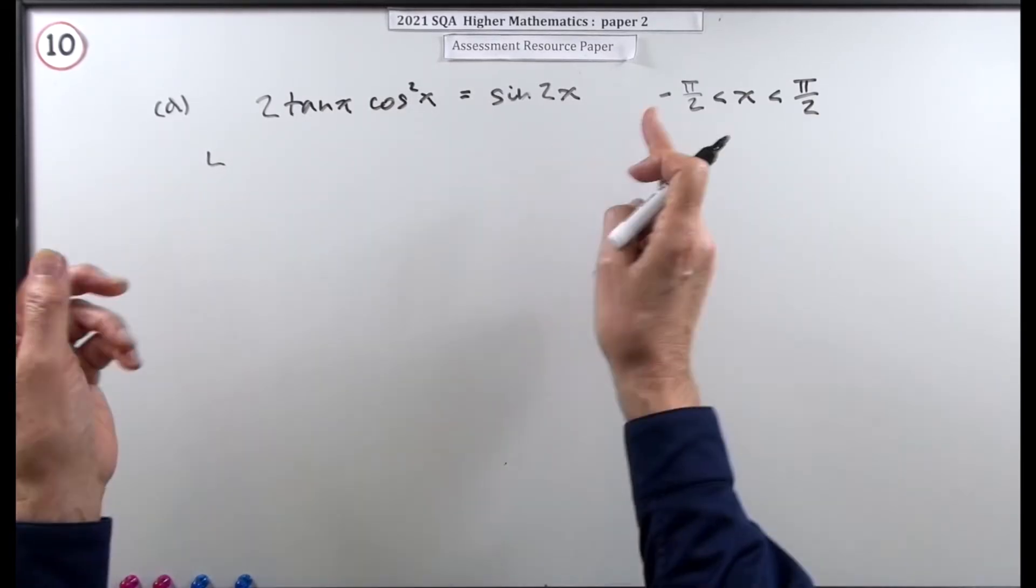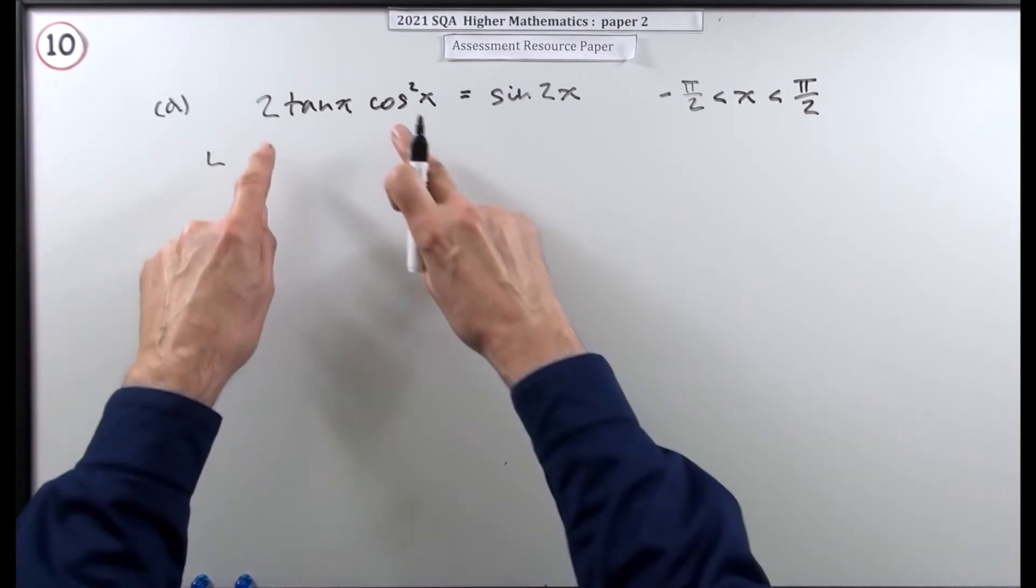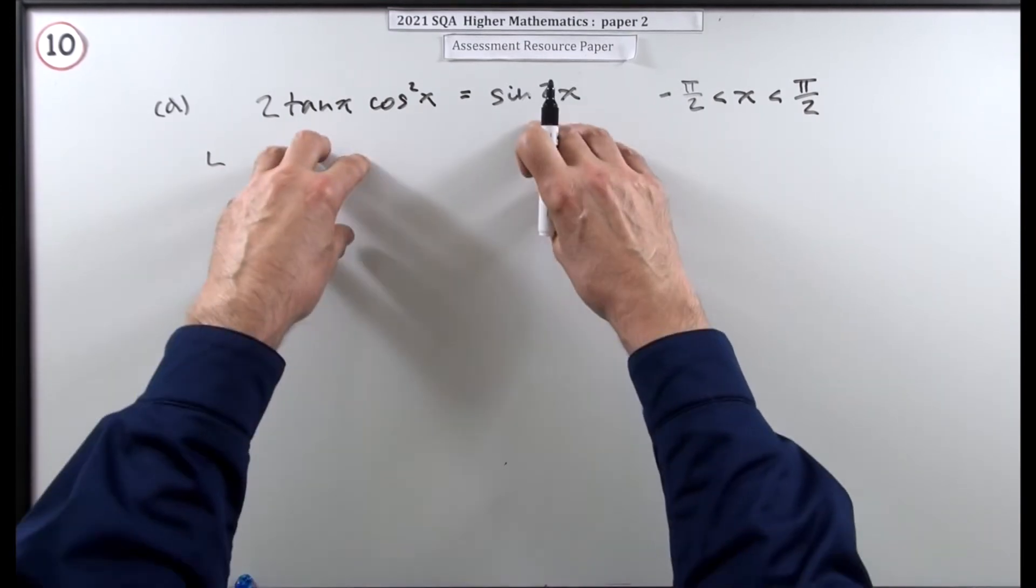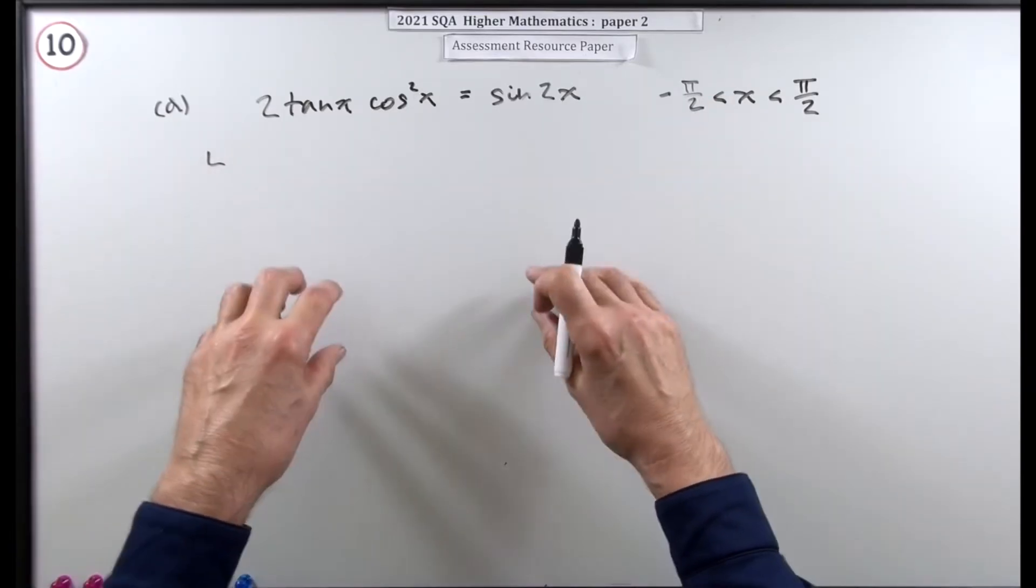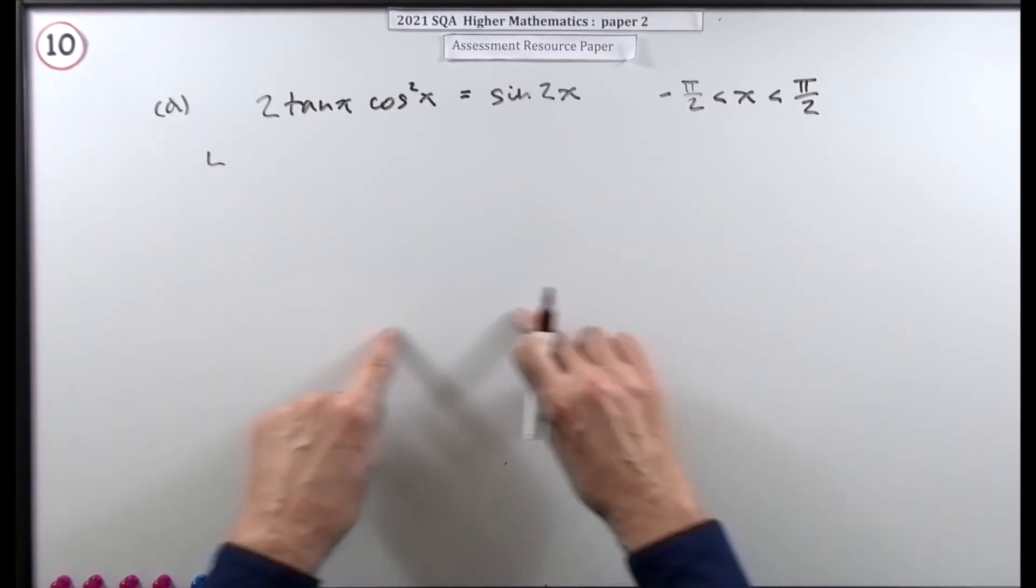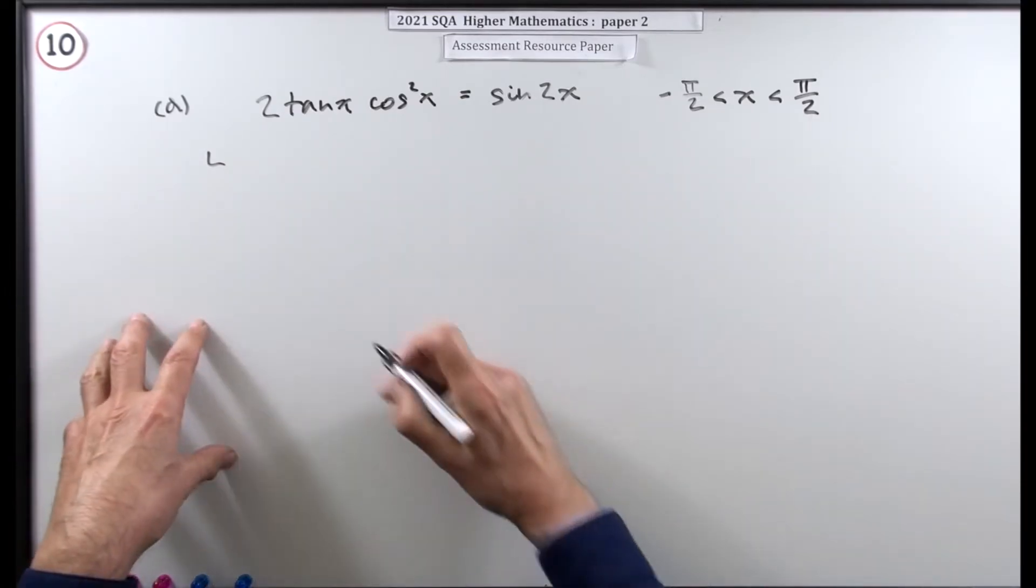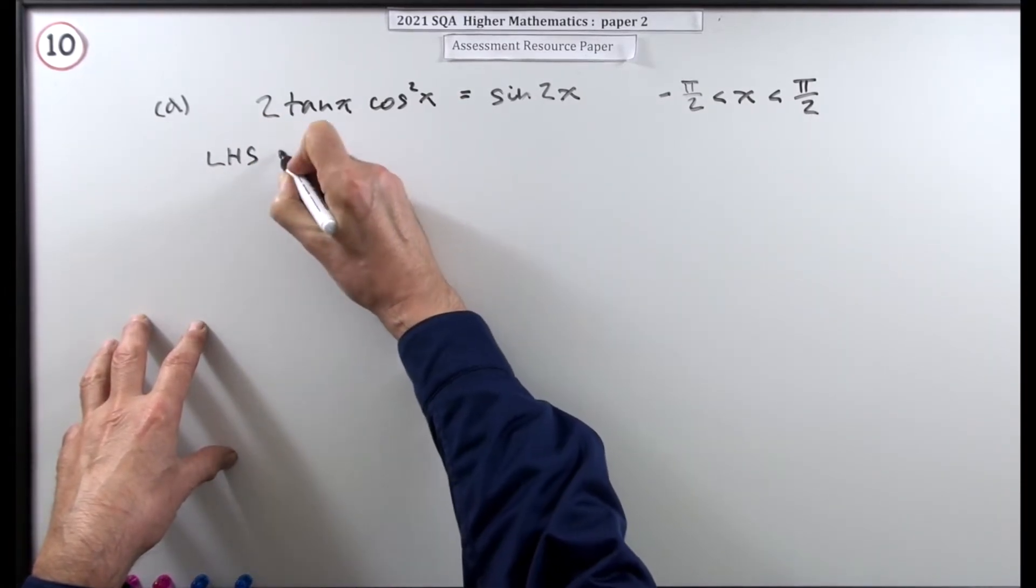But you could do it either way around. Another way if you get stuck is to take both sides independently and do various algebraic operations. If you end up with the same expression on both sides that would do as well. But this is going to work out quite easily.